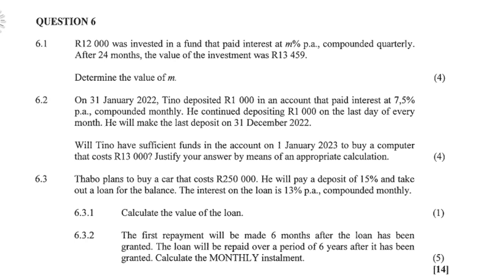Question 6.2. On 31st January 2022, Tino deposited 1,000 Rand into an account that paid interest at 7.5% per annum compounded monthly. He continued depositing 1,000 Rand on the last day of every month and will make his last deposit on 31st December 2022. Will Tino have sufficient funds on 1st January 2023 to buy a computer costing 13,000 Rand? Justify your answer by means of an appropriate calculation.